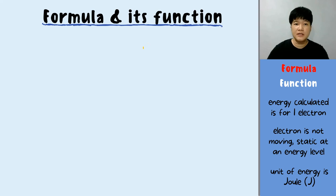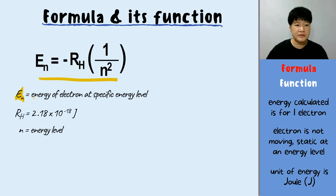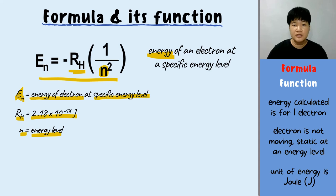The first formula we will look at is En, where En represents the energy of the electron at a specific energy level. Rh is the Rydberg constant, a fixed constant value of 2.18 times 10 to the power of negative 18 joules, while N represents the energy level. This formula is used to calculate the energy of an electron at a specific energy level.